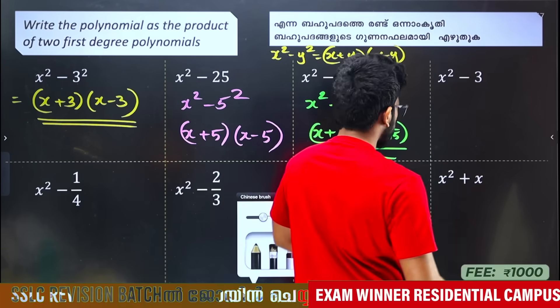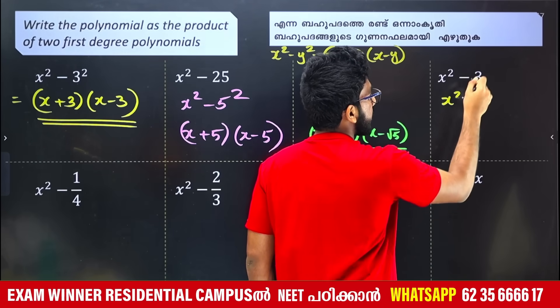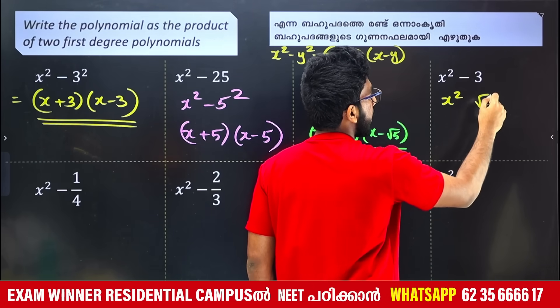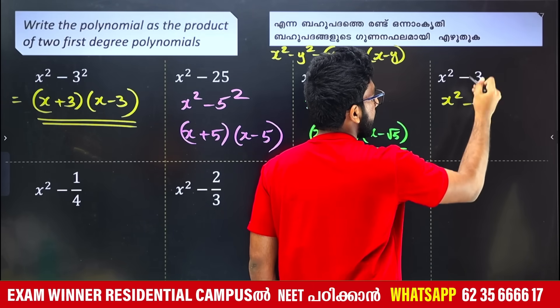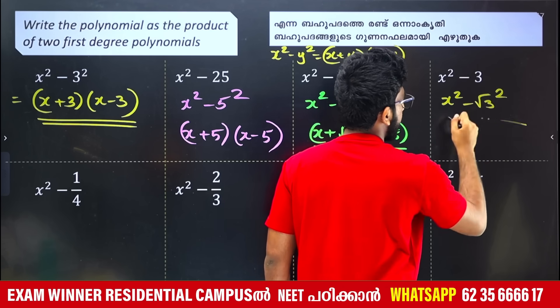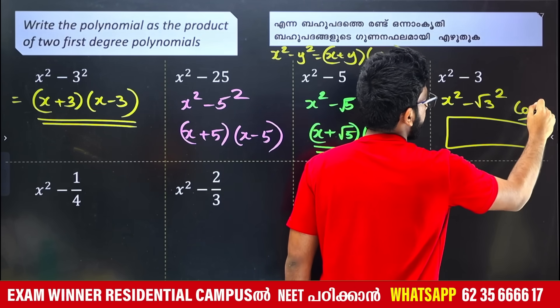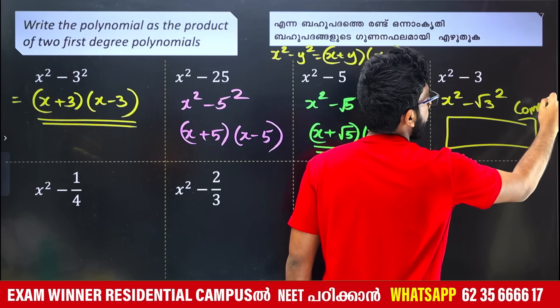x² minus 3√3 — that is also a square. Don't write an answer here in the comments. Please comment your answer. Let's practice this.